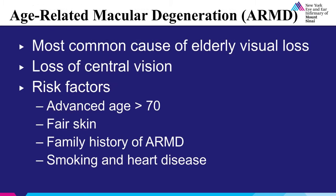First, I would like to discuss age-related macular degeneration, also referred to as ARMD or AMD. Within the United States, it is the most common cause of vision loss in the elderly. In age-related macular degeneration, there is loss of central vision with preserved peripheral vision.